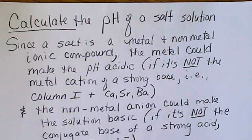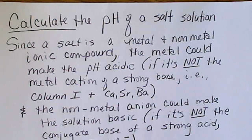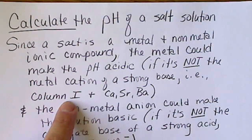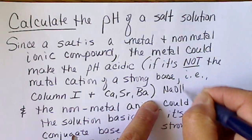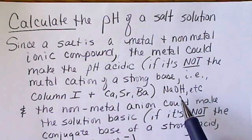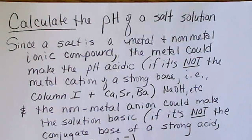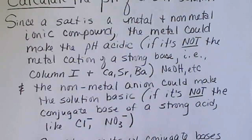In this video we will demonstrate how to calculate the pH of a salt solution. Recall that a salt is an ionic compound composed of a metal and a nonmetal. The metal with a positive charge could make the solution acidic, as long as that metal is not the cation of a strong base — for example, the Group 1 metals sodium, lithium, and so forth, or the heavier Group 2 metals. A nonmetal, which is a negatively charged anion, could make the solution basic, as long as the anion is not the conjugate base of a strong acid like chloride or nitrate.